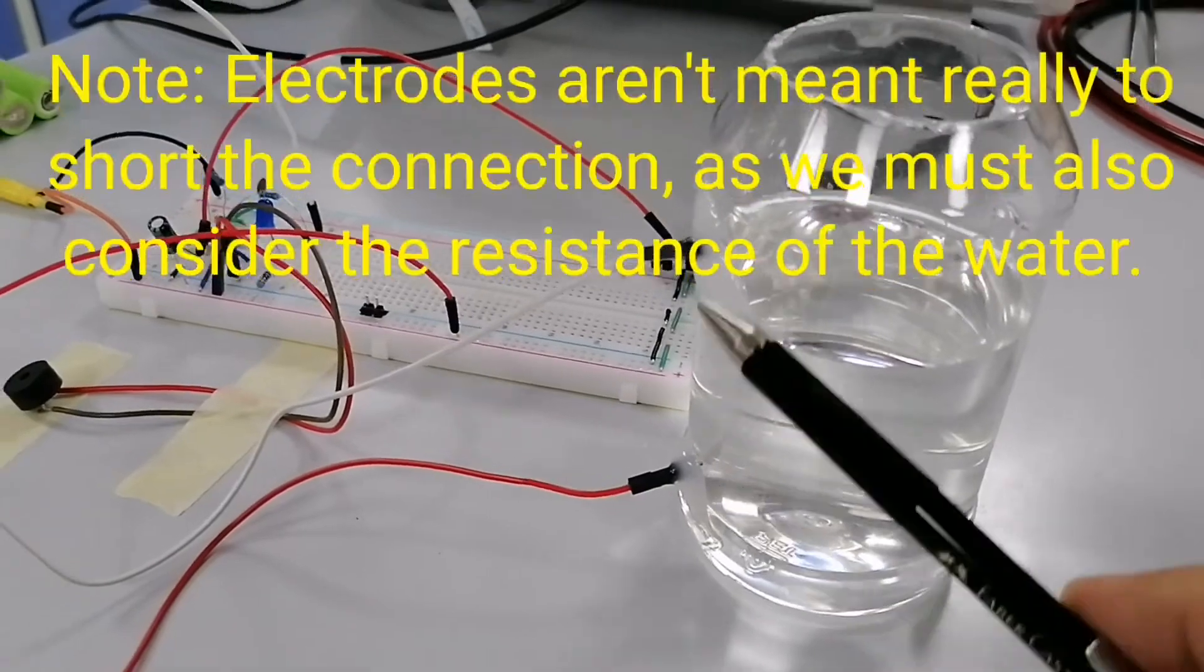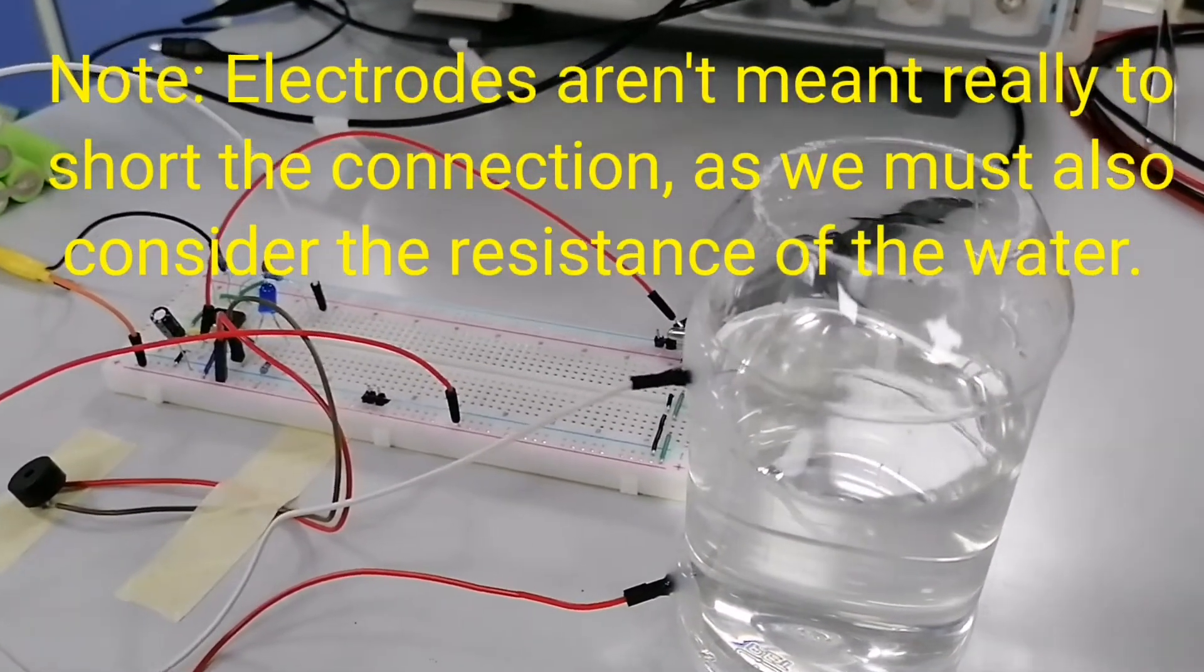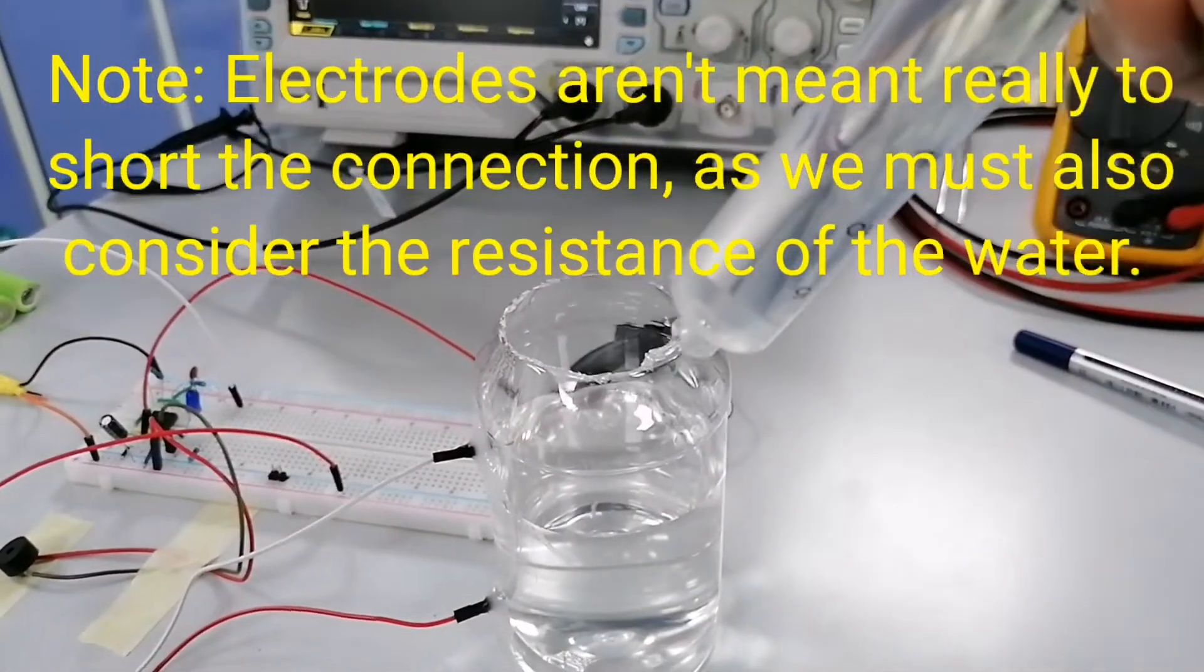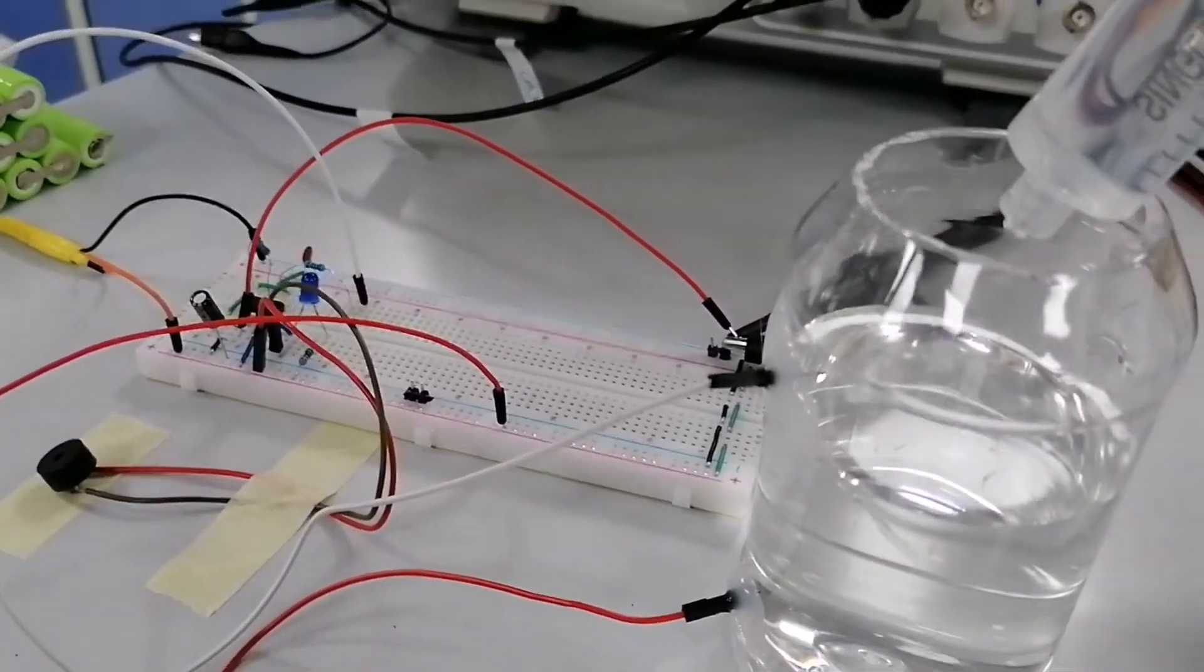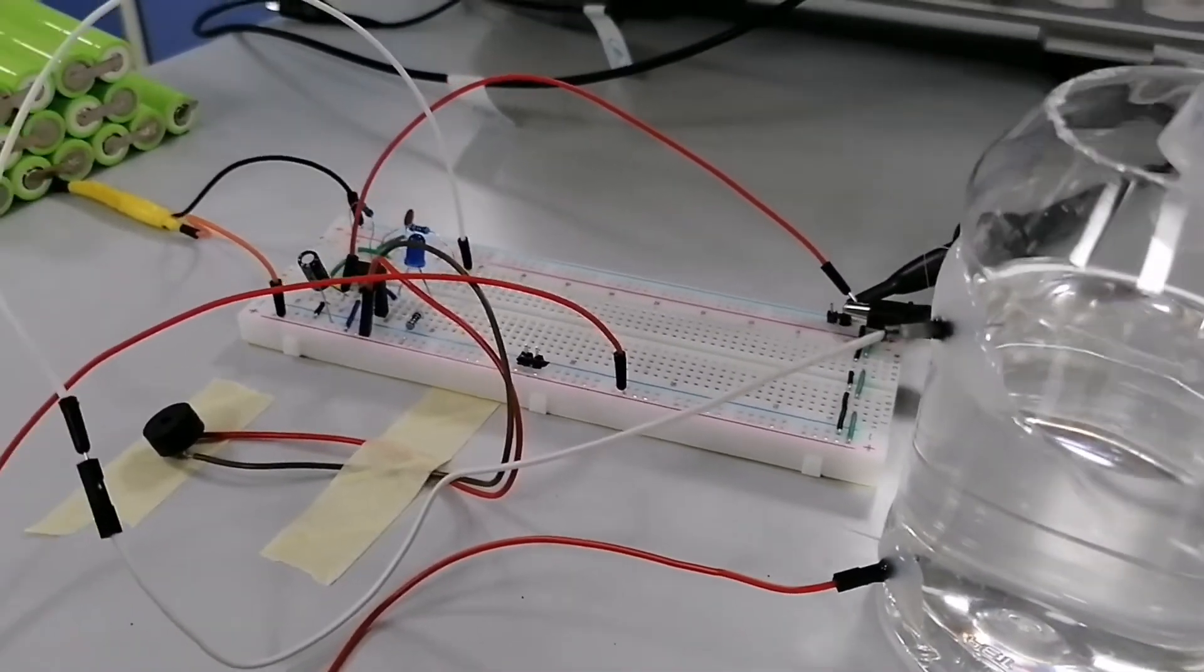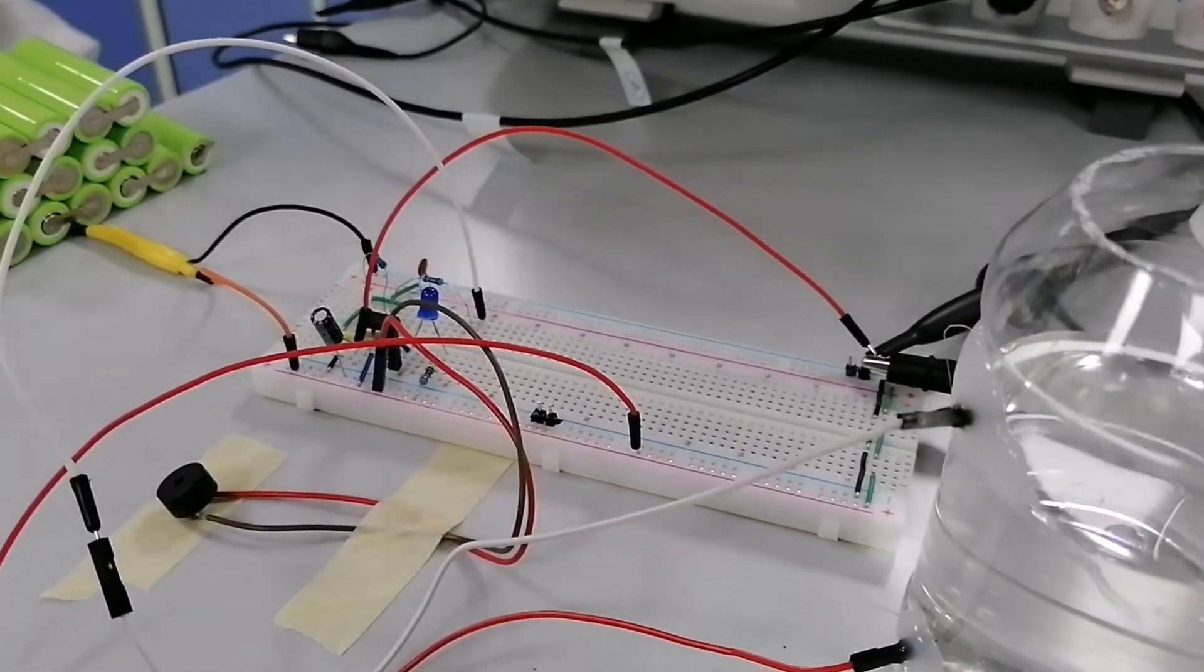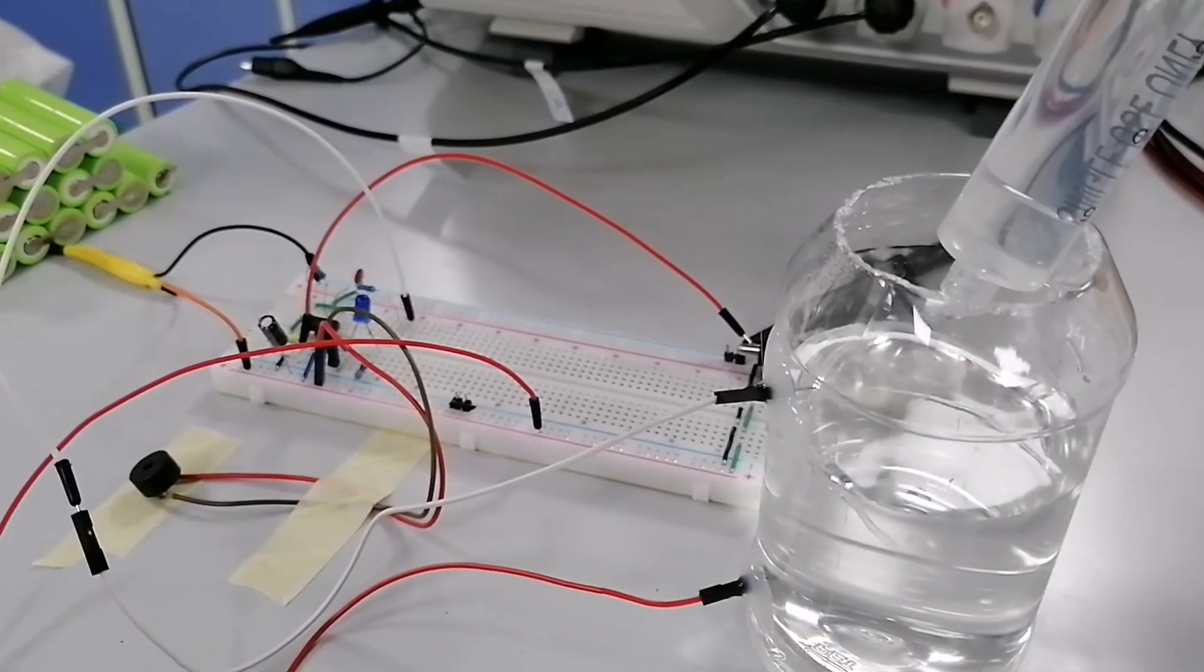And to short these two electrodes, I will add water. I am using this syringe. And please, I will fill water into the tank until the water touches the second electrode. And please observe the LED and the alarm buzzer.